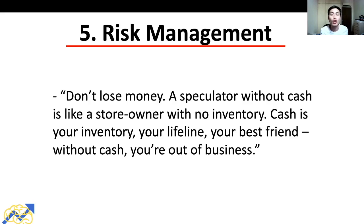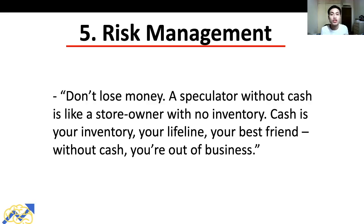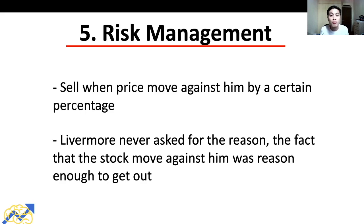Jesse Livermore's fifth rule is risk management. He said: don't lose money. A speculator without cash is like a store owner with no inventory — cash is your lifeline, your best friend; without it, you're out of business. Livermore would sell his positions when price moved against him by a certain percentage, and crucially, he never asked for the reason — the fact that the stock moved against him was reason enough to exit. Many traders look for reasons why a stock moved against them before selling, and by the time they figure it out, a small loss has turned into a big loss and placed a huge dent on their capital.